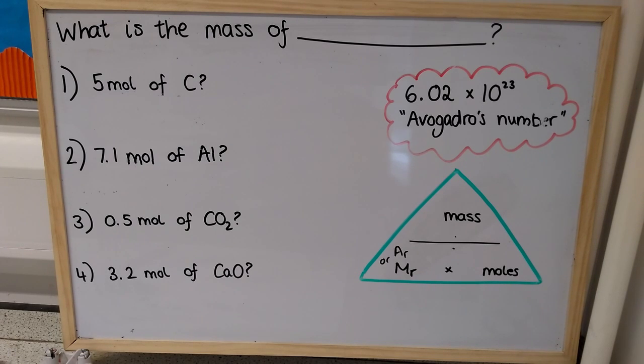And it also works for compounds. So if I know that the relative formula mass of water is 18, if I take 18 grams of water, then that will have 6.02 times 10 to the 23 molecules of water in it.